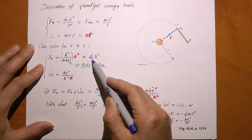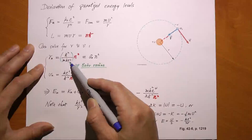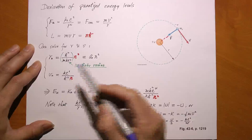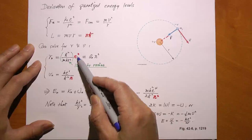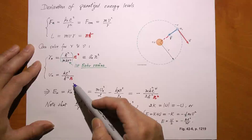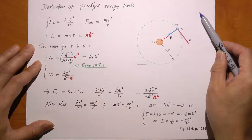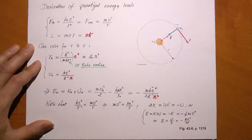The speed is also quantized—it cannot be just anything. The speed equals ke² / (h-bar·n). The further an electron is away, the greater the radius of the orbital, but the slower it moves. This agrees qualitatively with classical physics: even for a planet going around the sun, the further the planet is from the sun, the slower it moves.